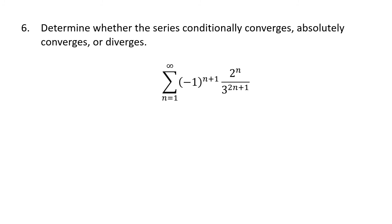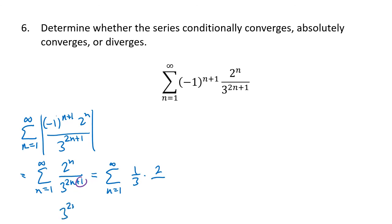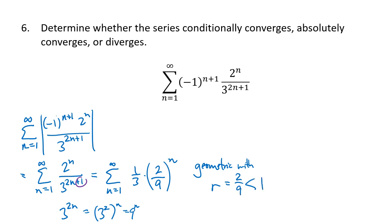For the last problem, we again have a series with an alternating sign, so we start by taking the absolute value, getting 2 to the n divided by 3 to the 2n plus 1. Separating out a factor of one third and rewriting 3 to the 2n as 9 to the n, we get one third times the sum of two ninths to the n. This is a geometric series with r equal to two ninths, and since two ninths is less than one, this series converges.